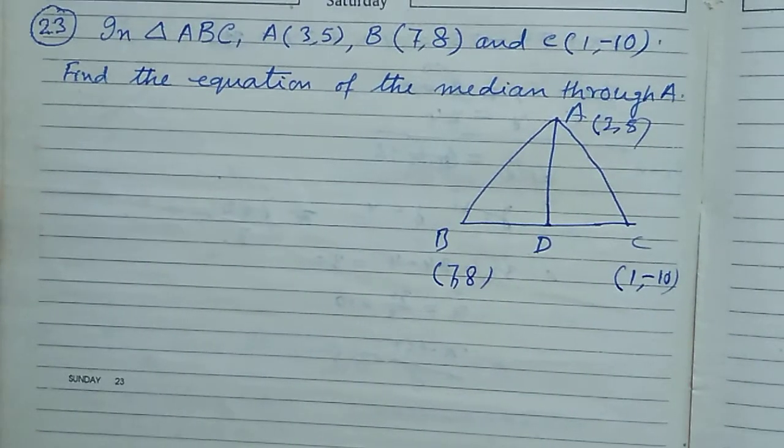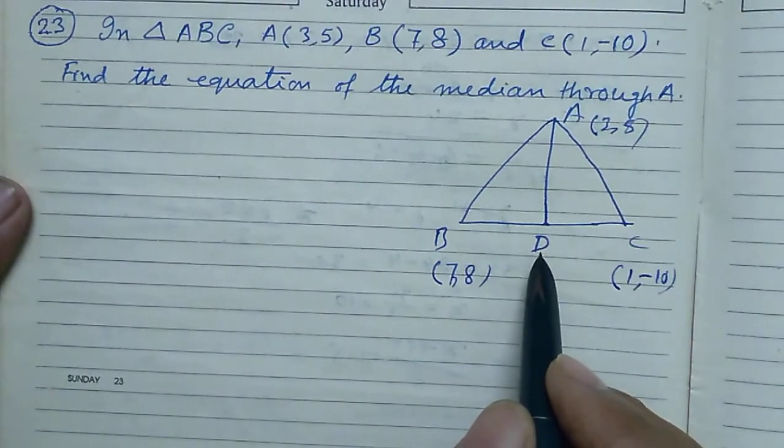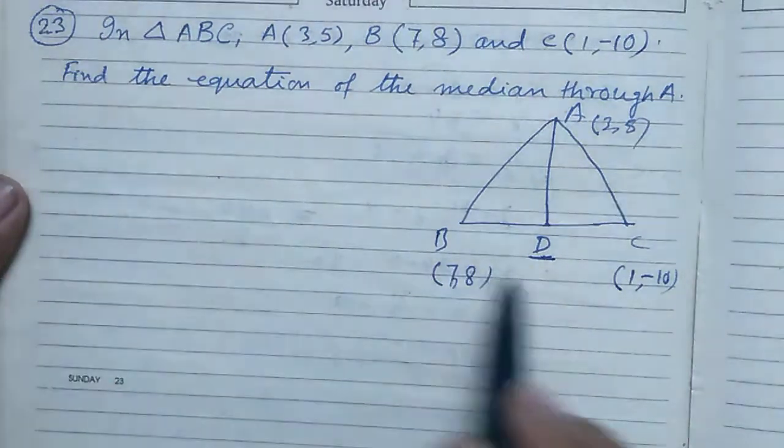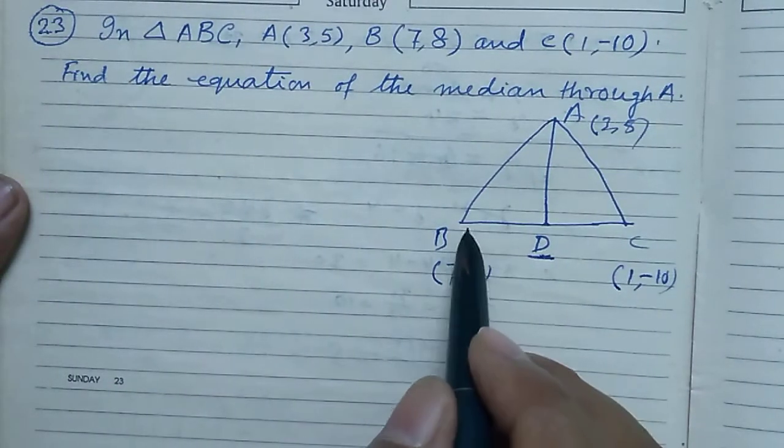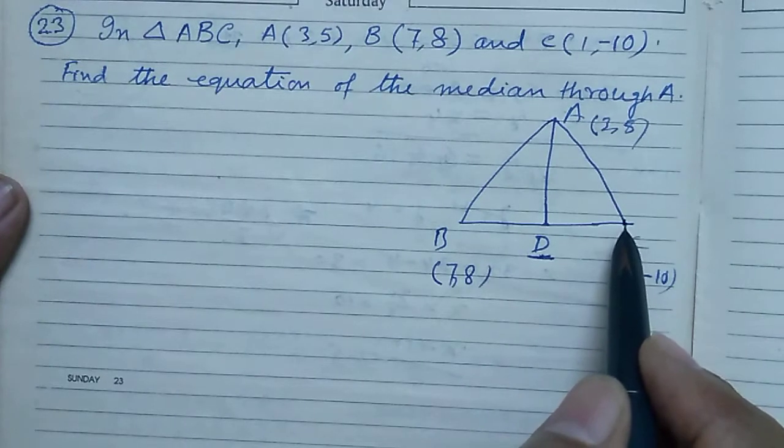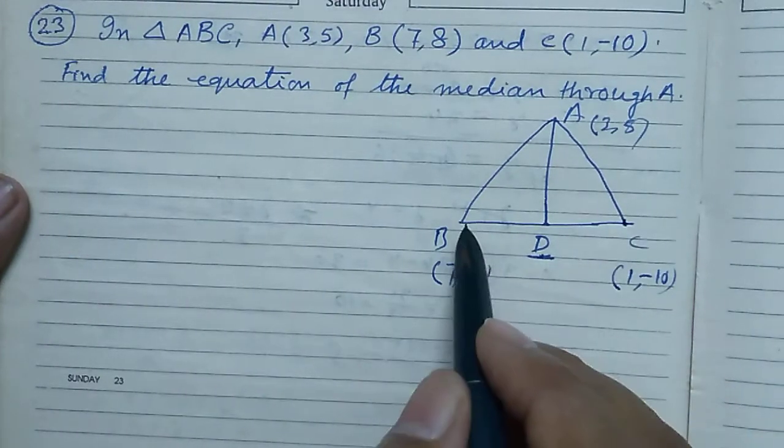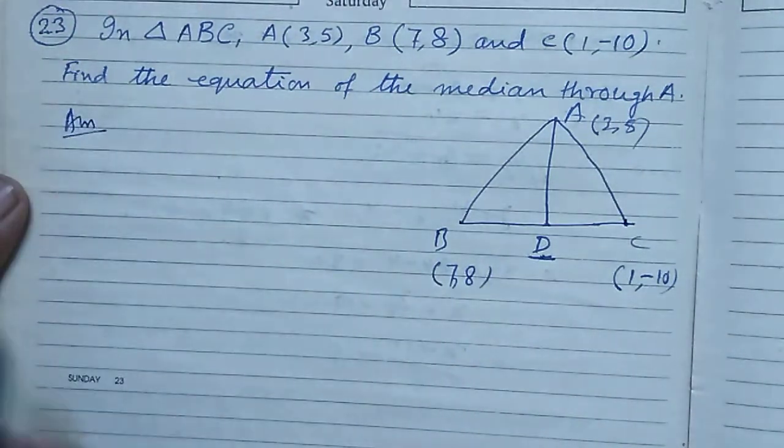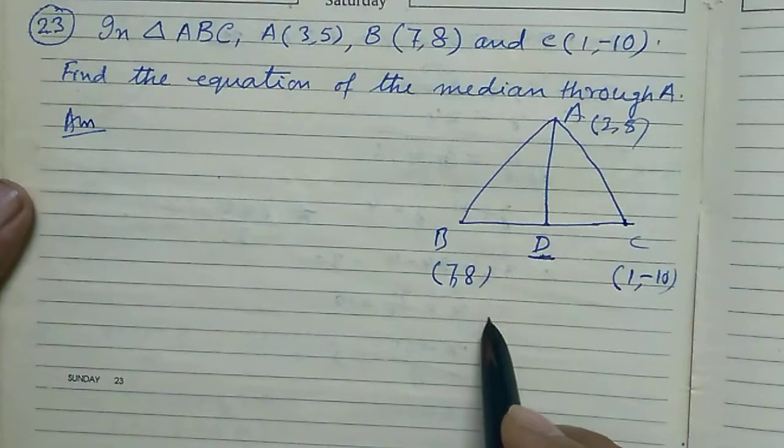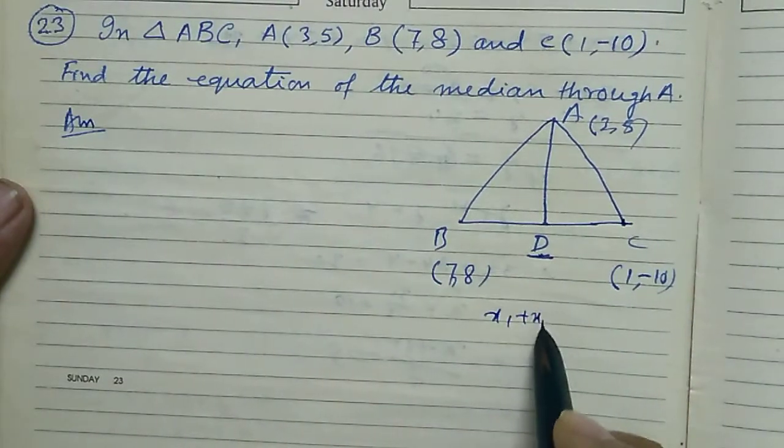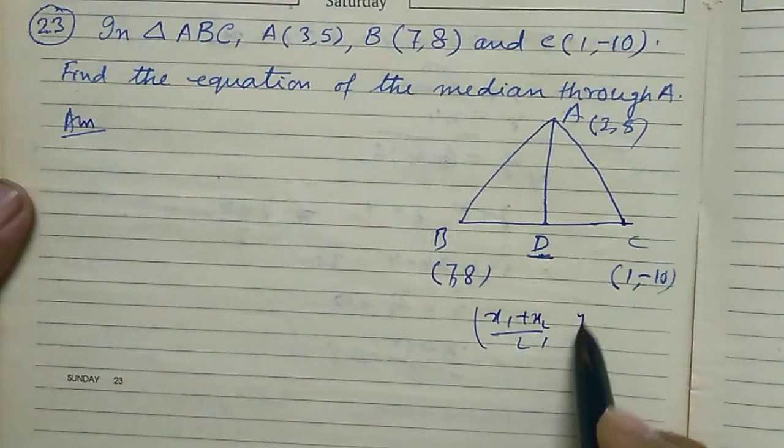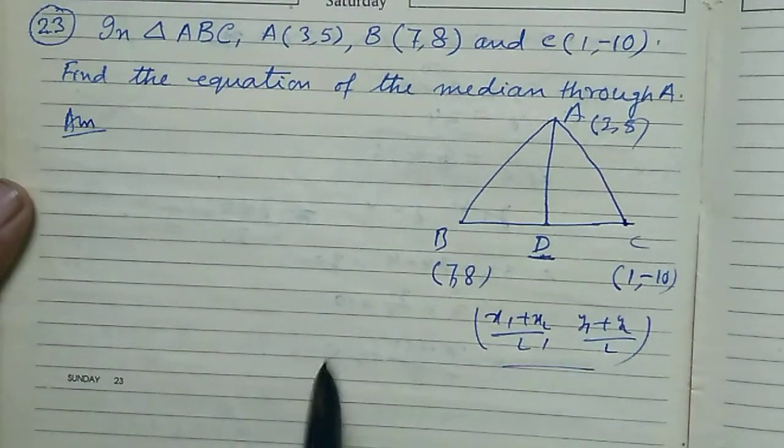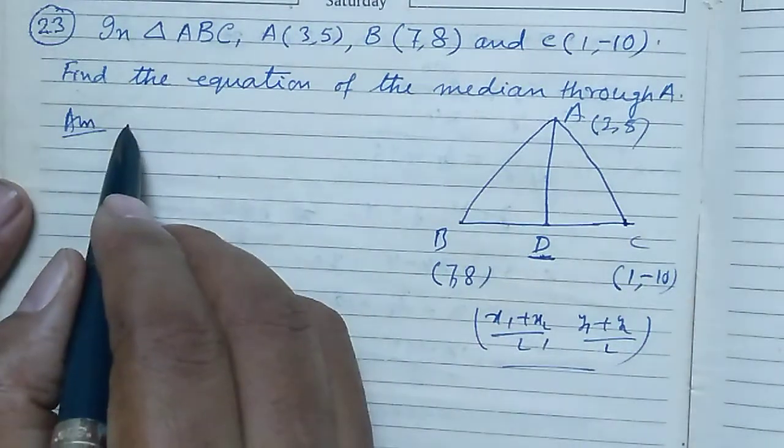At first, we have to find the coordinates of D. What is D? D is the midpoint of line segment BC or the side BC. What is the midpoint formula? X1 plus X2 by 2, Y1 plus Y2 by 2. Using this formula, we determine D.